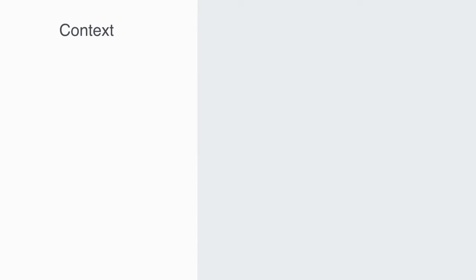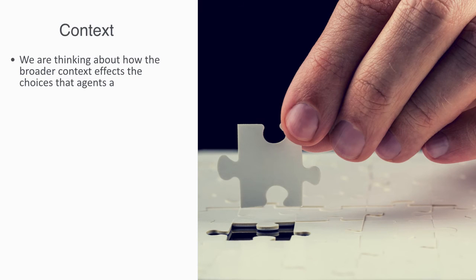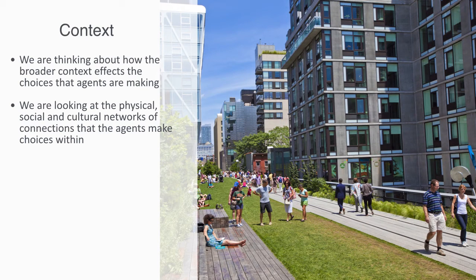By incorporating a wider spectrum of motives and values, behavioral economics has developed a very different model. Within this paradigm, we think about how the broader context affects the choices that agents are making — looking at the physical, social, and cultural networks of connections within which agents make choices, and how these networks can add or subtract value from agents' motives in order to alter them. For example, in a purely physical context, behavioral economics looks at how choices are arranged within space, such as the layout of a city where plentiful open spaces make walking a more desirable mode of transport.